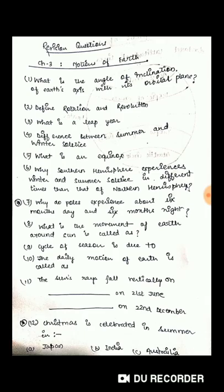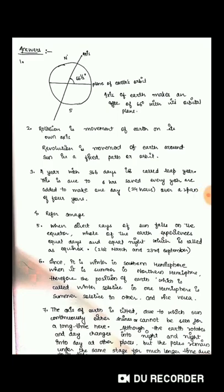So students, you must have tried recalling those answers. Let's see where we stand. Our first question was, what is the angle of inclination of Earth's axis with its orbital plane? The axis of Earth is tilted, which makes 66 and a half degree angle with the orbital plane.